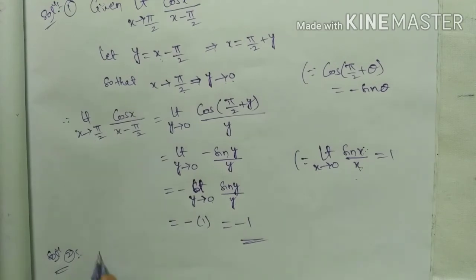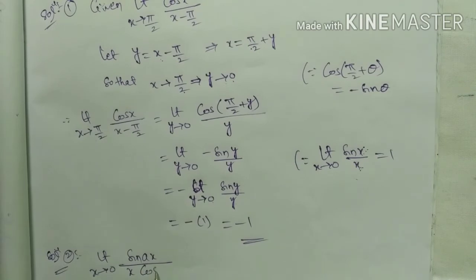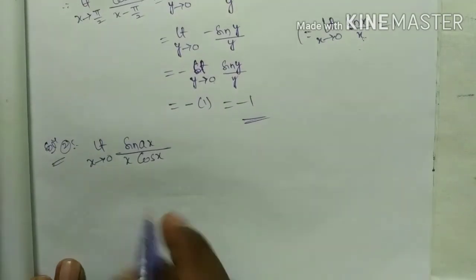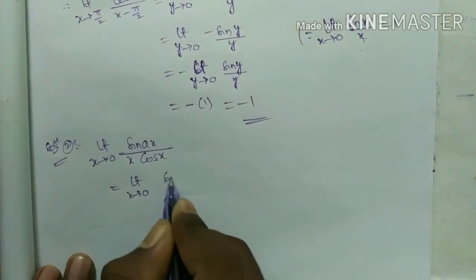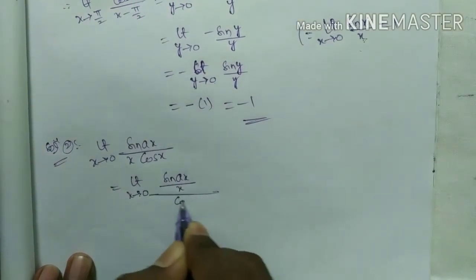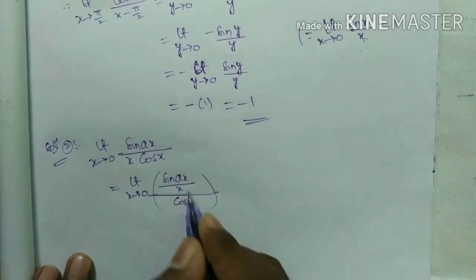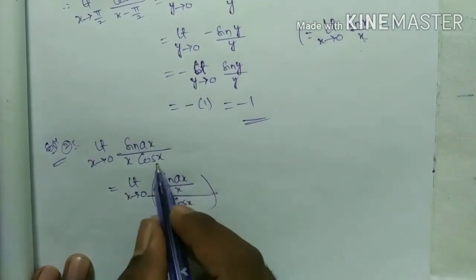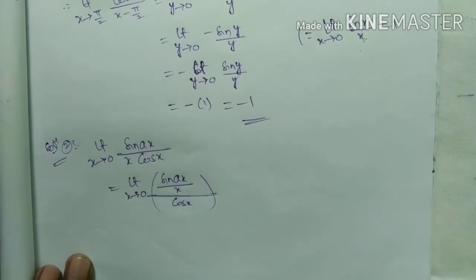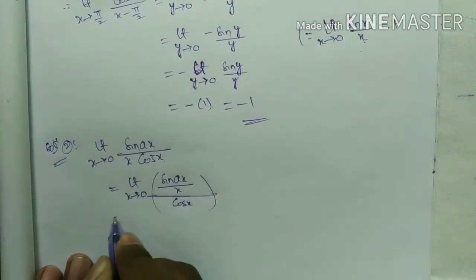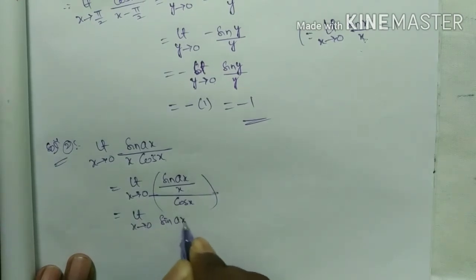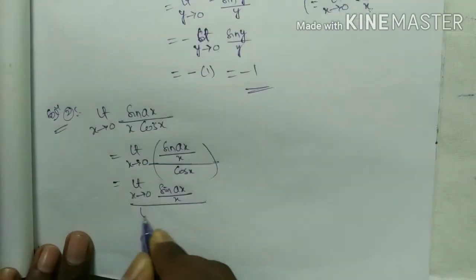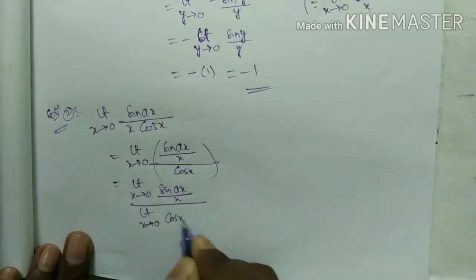Solution second one. Limit x tends to 0 of sin(ax) / (x cos x). We can write this as limit x tends to 0 of sin(ax) / x divided by cos x, splitting numerator and denominator.